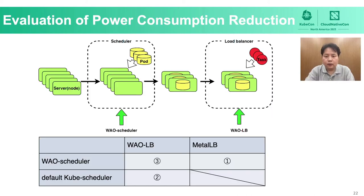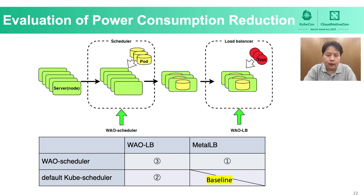Let me now talk about our evaluation plan for the Kubernetes-based WoW for data center power savings. WoW consists of WoW Scheduler for pod allocation and WoW LB for task allocation. We use the default Kube Scheduler and Metal LB as the default baseline for comparison. Three combined effects of both WoW Scheduler and WoW LB can be derived here — we want to see how much power savings can be obtained from our WoW compared to the default Kubernetes baseline.